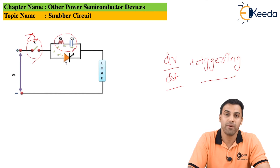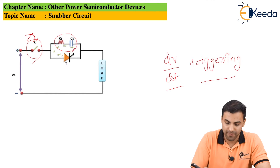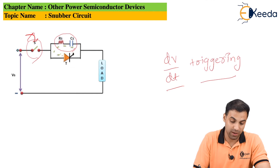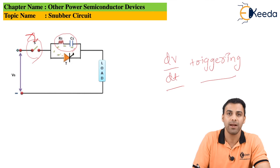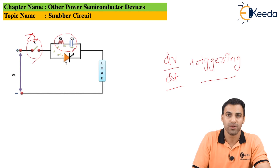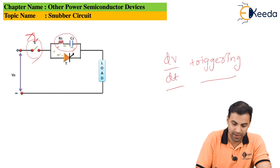Because of dv/dt triggering, the thyristor gets triggered automatically and the circuit conducts electricity, which needs to be avoided.